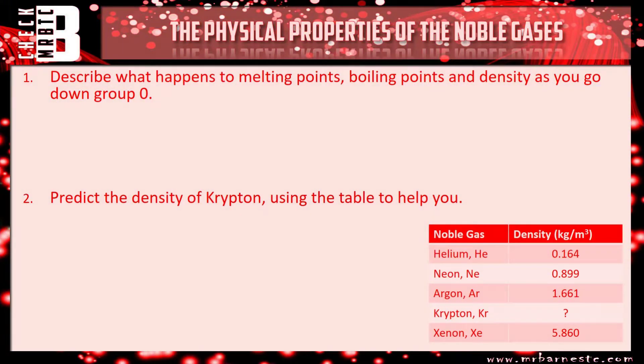Okay let's see how you've done. So if we start off with question one then. Describe what happens to the melting point, boiling point and density as you go down group zero. You should remember from what we've talked about that the melting points increase. If the melting points increase so do the boiling points. That's your first two marks.